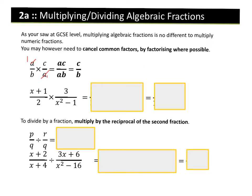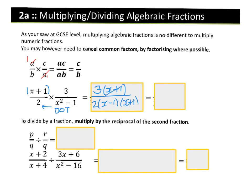In the second example, I check first if I can simplify either numerator or denominator. I can't simplify the numerator, so I multiply those three together to give 3(x+1) over 2. The denominator here is a difference of two squares, so factorising gives (x−1)(x+1). Multiplying those together, I can cancel out the x+1 to give a final answer of 3 over 2(x−1).